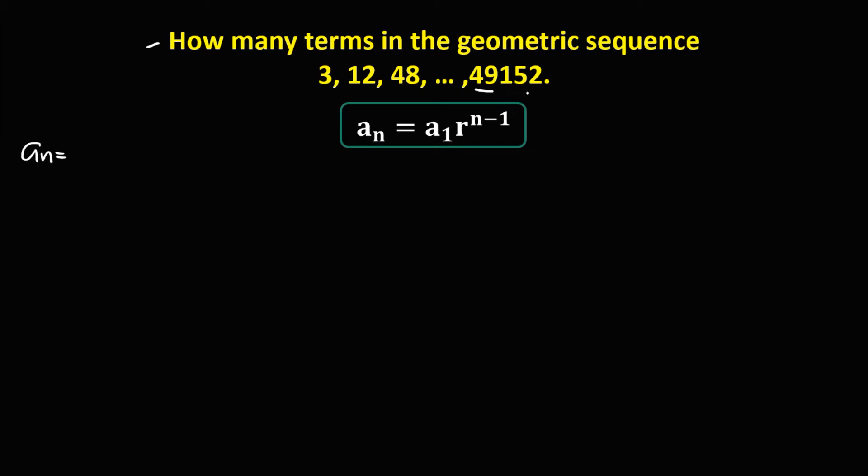a sub n is the last term, so that's 49,152. Then a sub 1 is the first term, so positive 3.